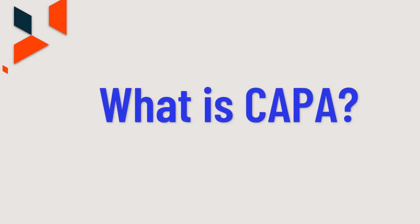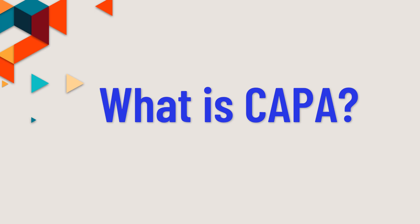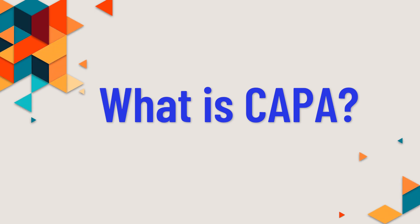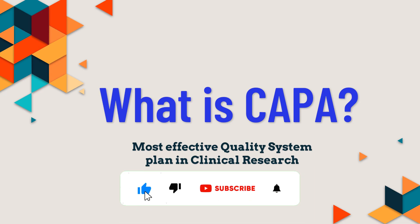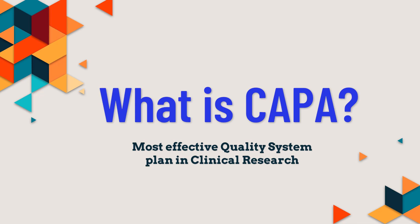Hello everyone and welcome to a new video. Today we are going to discuss what exactly is CAPA. CAPA is nothing but Corrective and Preventive Action — it is one of the most effective quality management plans in clinical research. Make sure you watch this video till the end to understand how corrective and preventive actions are implemented in clinical trials and how quality is maintained.